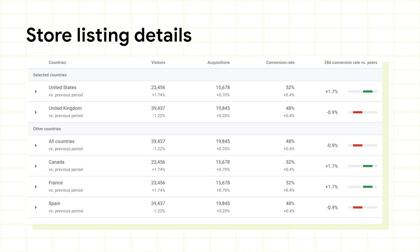At the bottom of the page, there's a summary table for your selected period, with a sum of daily visitors, acquisitions, and your app's weighted average conversion rate. In addition to the values you chose to plot at the top of the page, you'll see totals for other dimension values here as well, so you can see whether they're trending up or down, and decide whether they're worth digging into further.